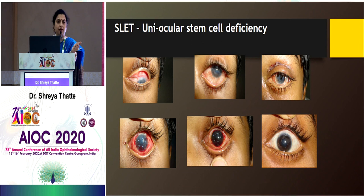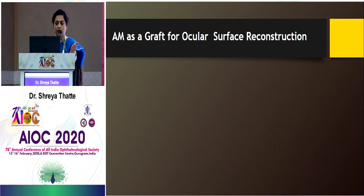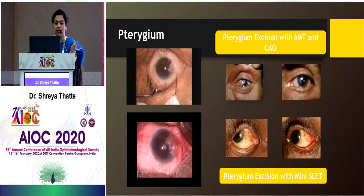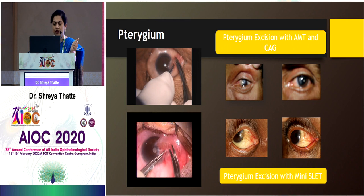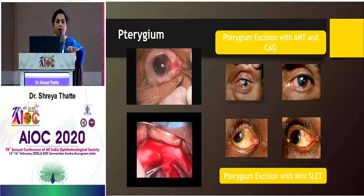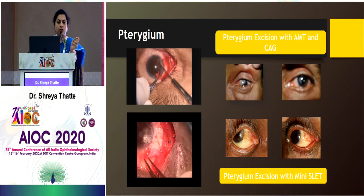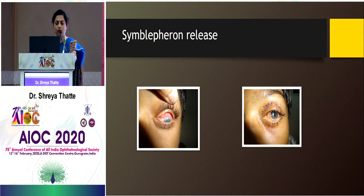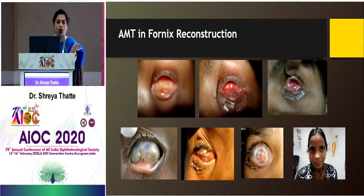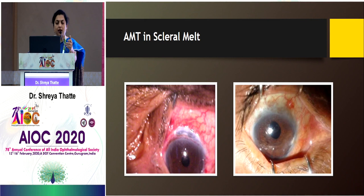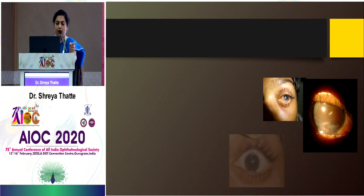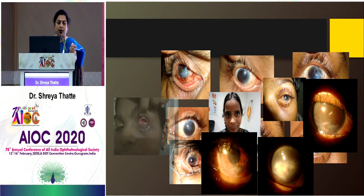Symblepharon can be released, and even in a blind eye with a shallow fornix, the fornix can be reformed with amniotic membrane. In scleral melt — such as post-SICS scleral melt — multi-layer amniotic membrane was placed and healed very well. All these cases can be turned into better eyes; ocular surface diseases can be effectively treated with amniotic membrane.